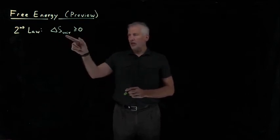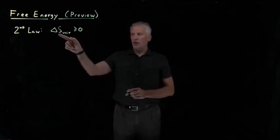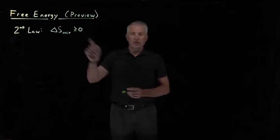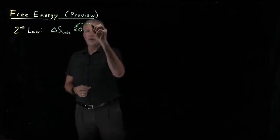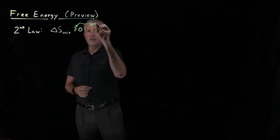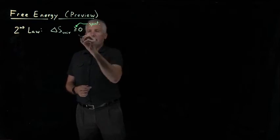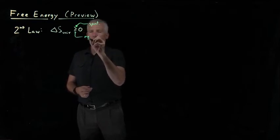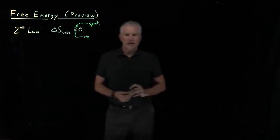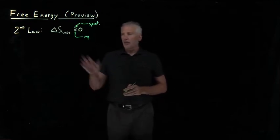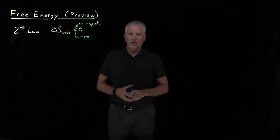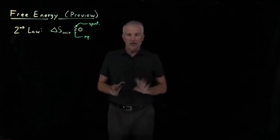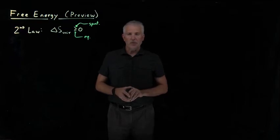The second law is usually written in this form: the change in the entropy of the universe must be greater than or equal to zero. It will be greater than zero for a spontaneous process, and it will be equal to zero for a process that's in equilibrium. Any process for which the entropy change of the universe is negative will be a non-spontaneous process — that won't happen.